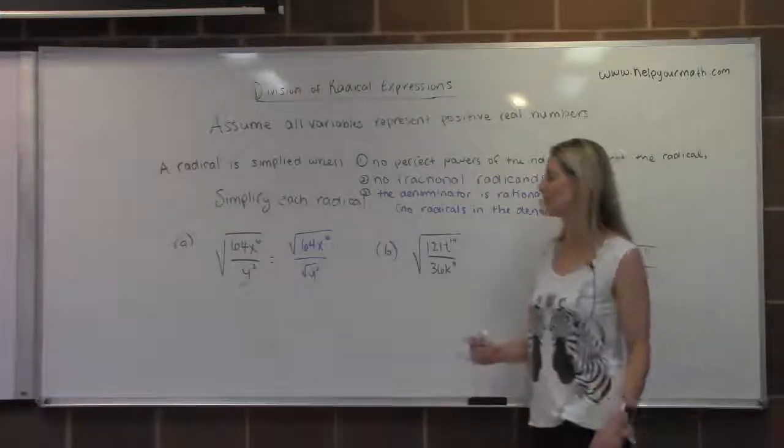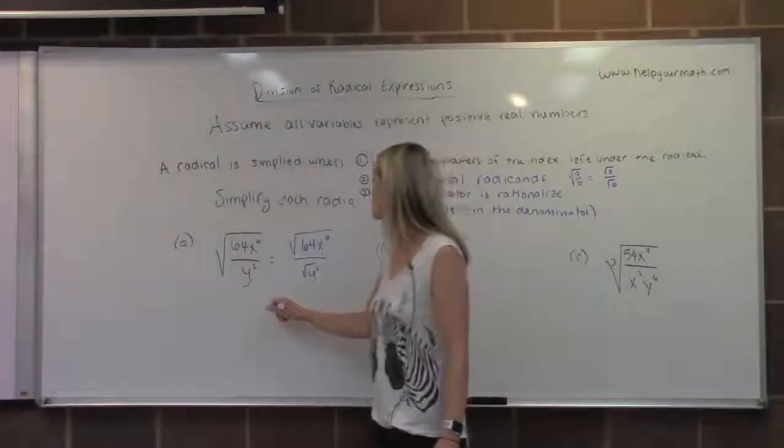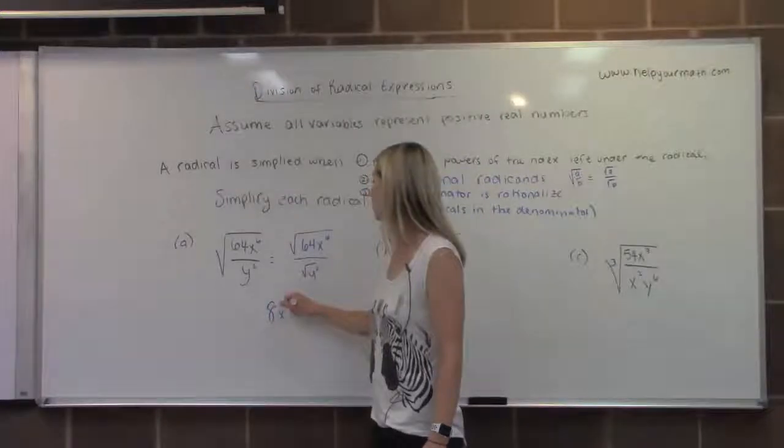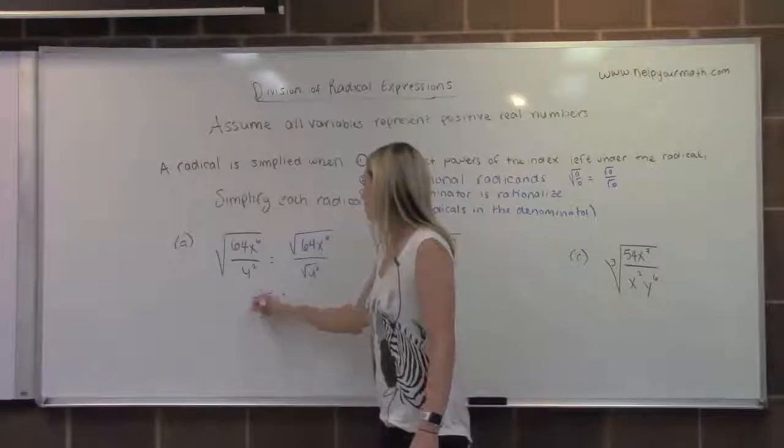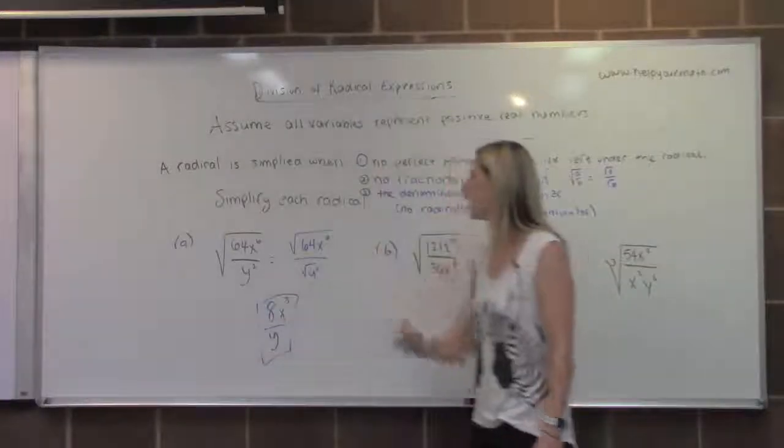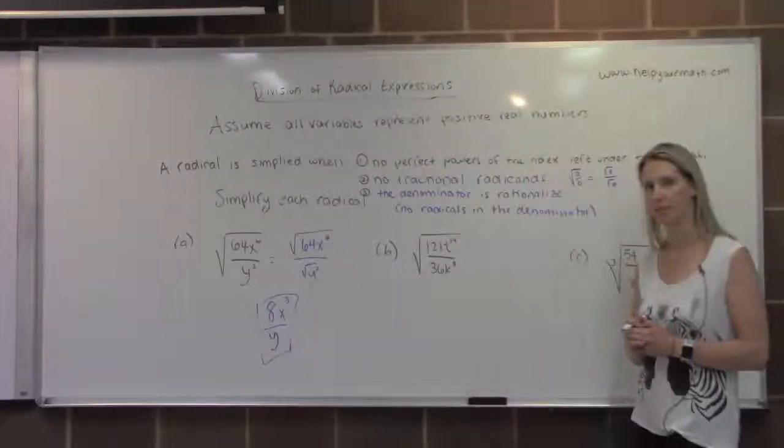64 is a perfect square and its root is 8. x to the sixth is a perfect square and its root is x to the third. And in the denominator, the square root of y squared is y. So in this case, we have no radicals left, and that would be our final simplified expression.